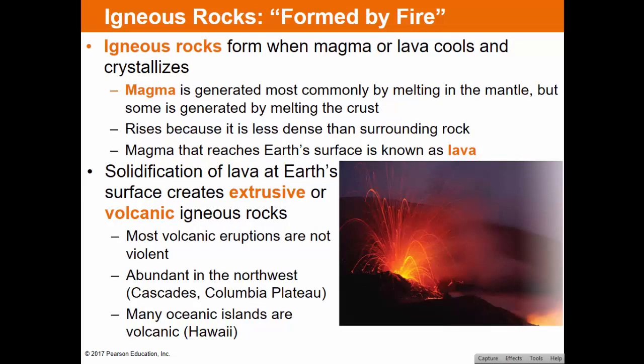Let's talk about igneous rocks — rocks formed by fire. Igneous rocks form when magma or lava cools and crystallizes. Magma is generated most commonly by melting in the mantle, but some is generated by melting in the crust. It rises because it heats up and expands and is less dense than surrounding rock. Magma that reaches the Earth's surface is known as lava. Solidification of lava at the surface creates extrusive or volcanic igneous rocks.